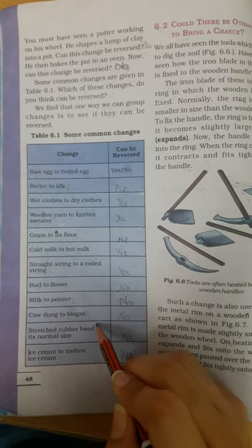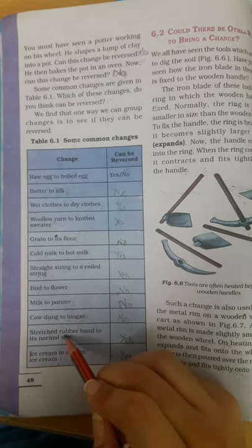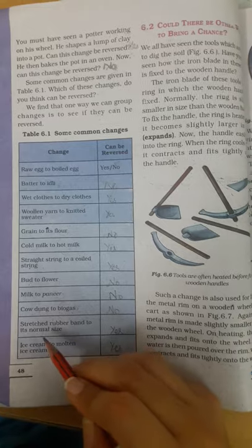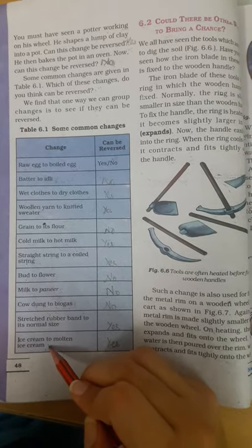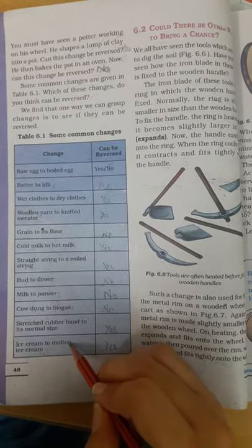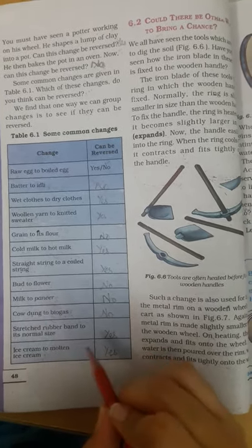Yes. Usko stretch kareenge, stretch ho jayega. And when we leave the rubber band it will be normal size. Ice cream to molten ice cream - when we'll take the ice cream from the freezer it will be molten, pighal jayegi. Once we keep back the ice cream to the freezer it will be frozen ice cream.